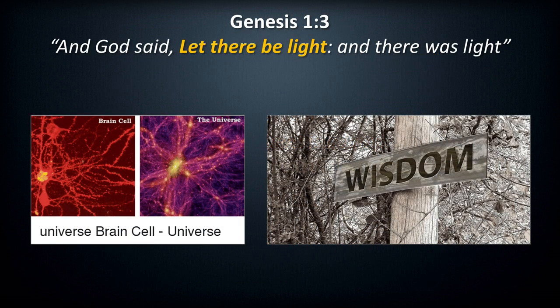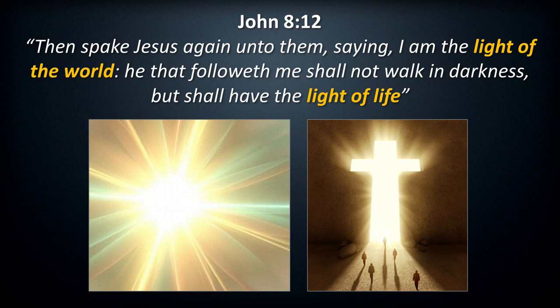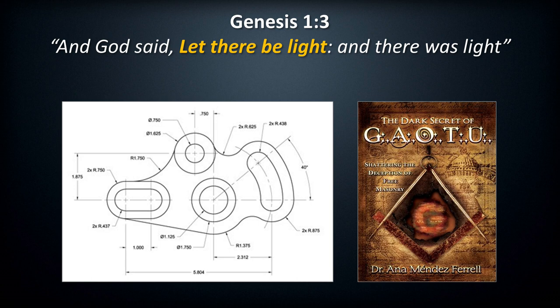Proverbs 6:23: 'The commandment is a lamp and the law is light.' Daniel 5:14 associates light with wisdom, understanding, and God's laws — we can see where the term 'illumination' came from. Along with the birth of the multiverse there also seems to be the birth of a type of consciousness. Something that has fascinated many in recent years is the discovery that our universe looks like neurons — it is as if we all live inside a giant brain. John 8:12: 'I am the light of the world; he that followeth me shall not walk in darkness but shall have the light of life.' Jesus is light, and light is life. The world of duality we live in is being formed — we are still in 2D.